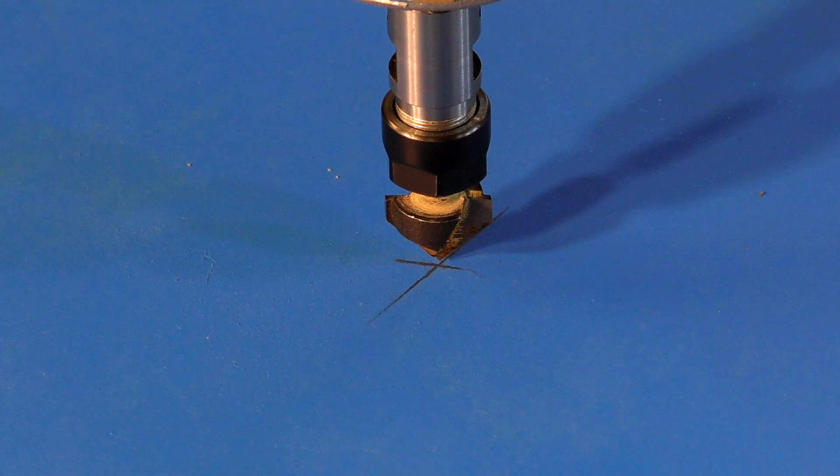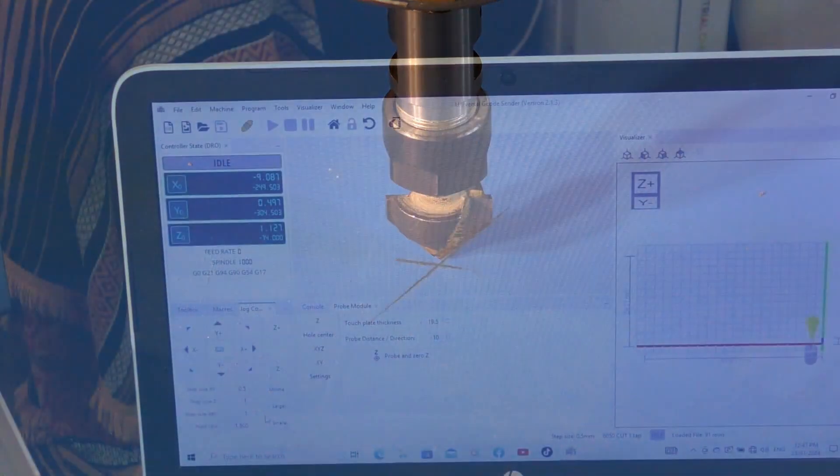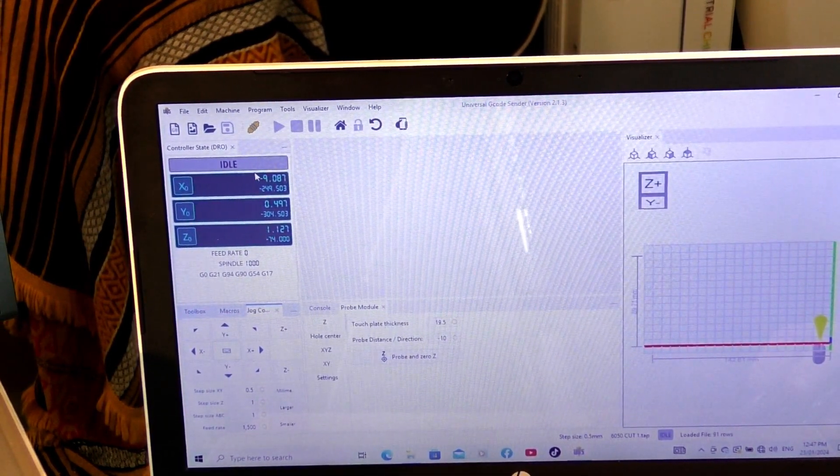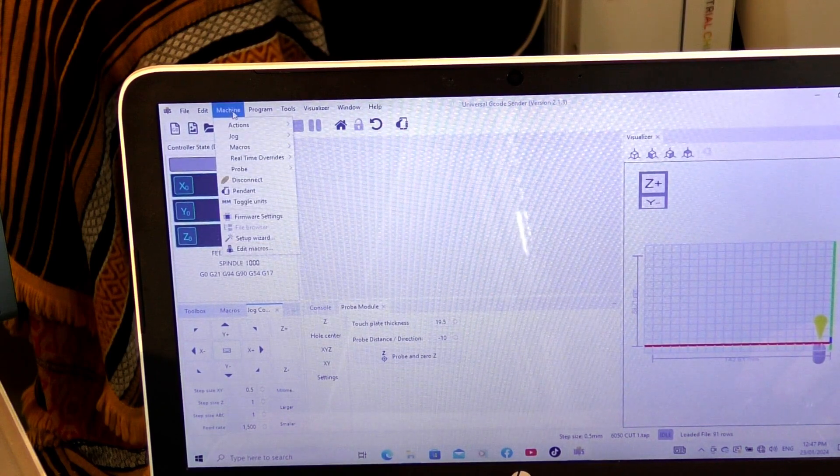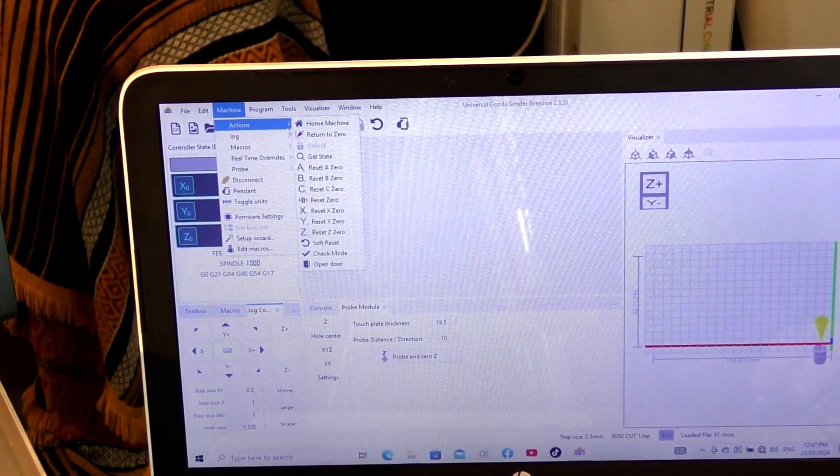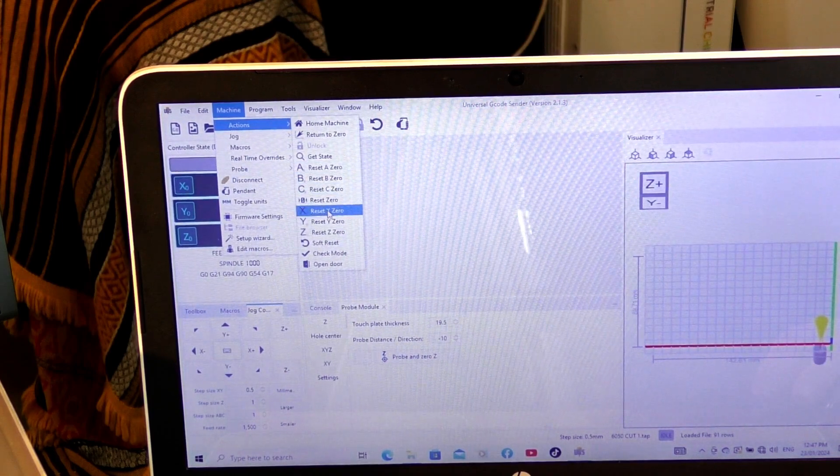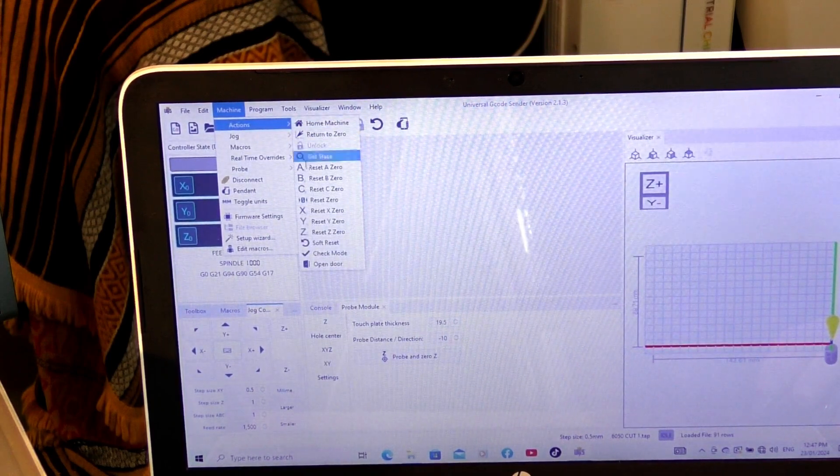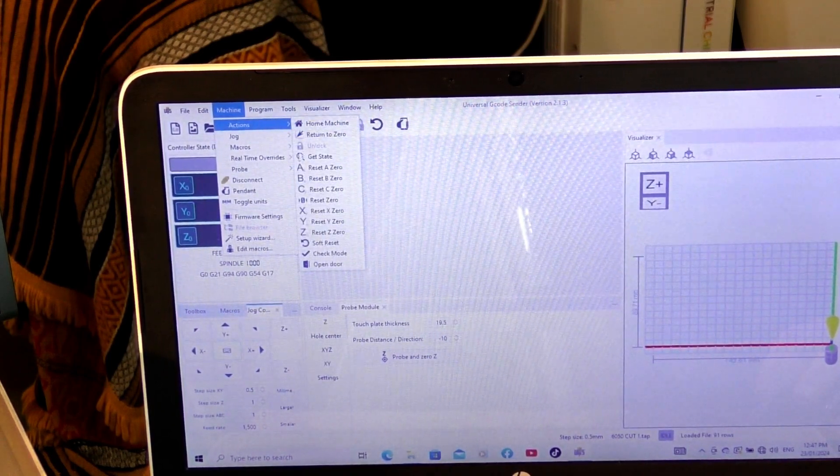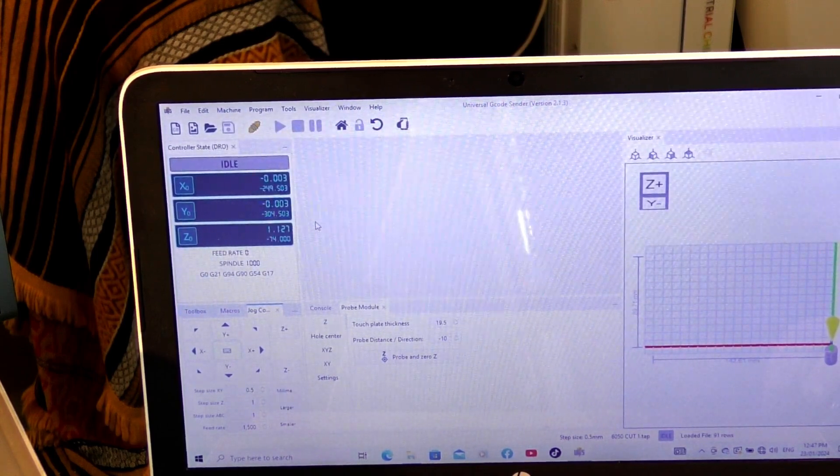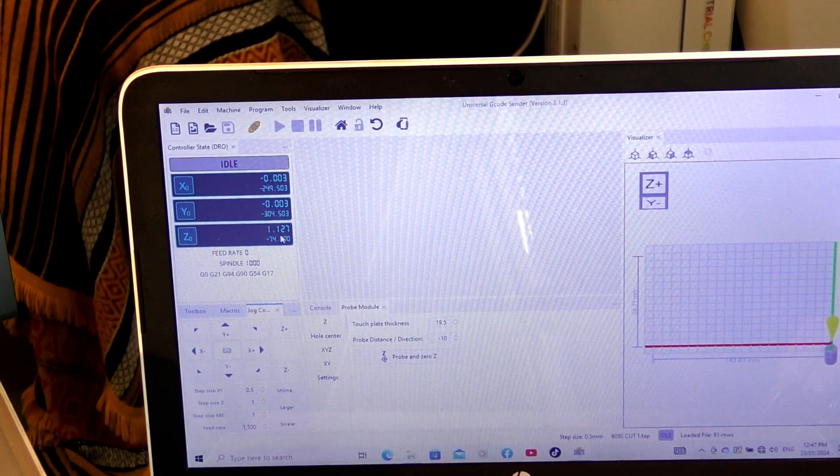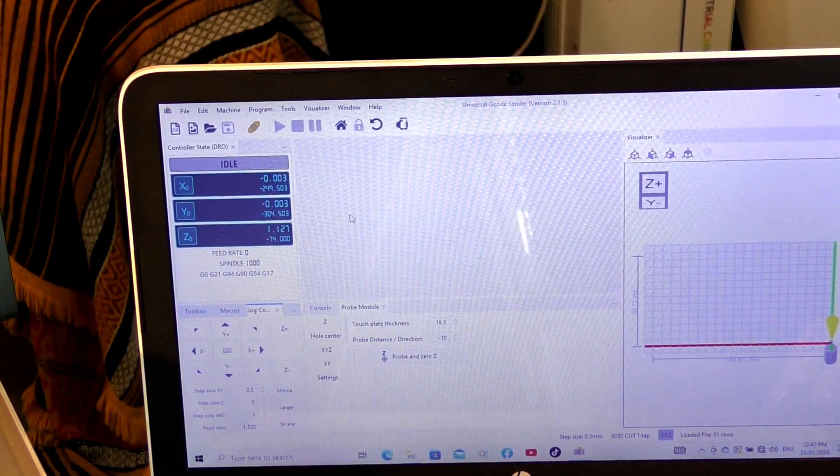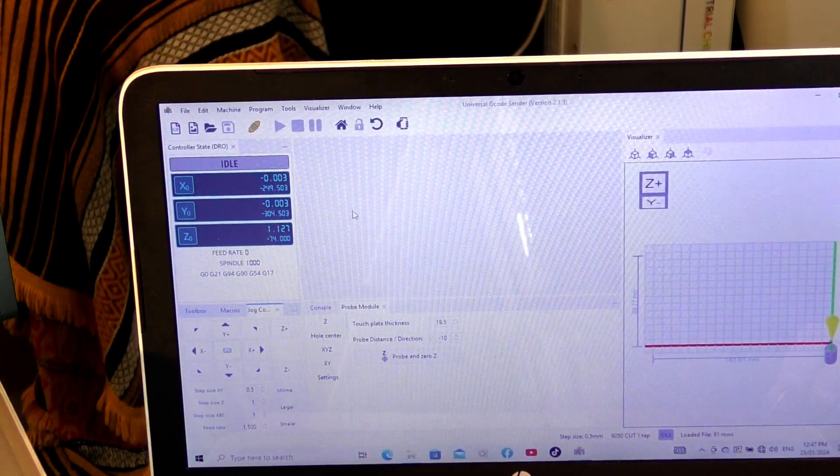So now I'm going to set the zero-zero in UGS. I'm going to set the job zero-zero by opening Machine Actions and X-zero, Machine Actions, oops missed it, Y-zero. And of course we've already set the zero position of the Z, so we don't have to worry about that. So now we are ready to bring in our first toolpath.